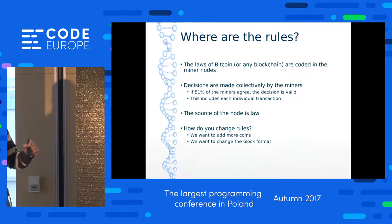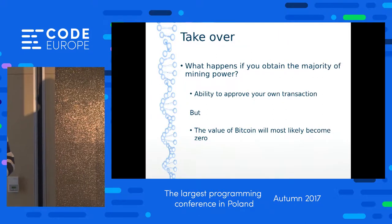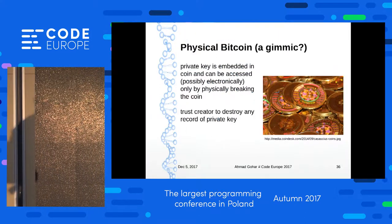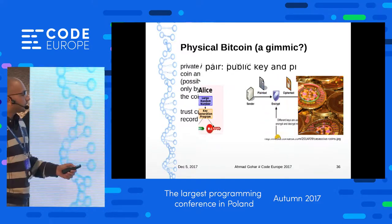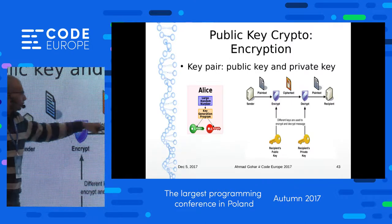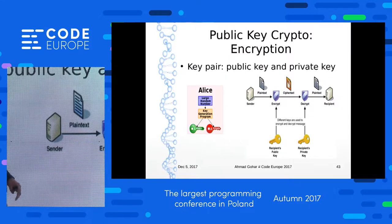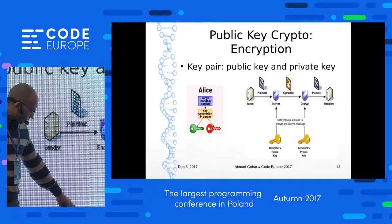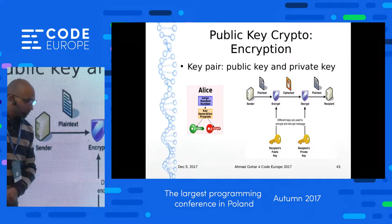Do we have a physical Bitcoin? Yes, we have a physical Bitcoin. We mentioned that we have a public and private key: when a sender needs to send a message or anything to be shared using blockchain, it needs to be encrypted using the public key, and the receiver will decrypt the message with the private key.